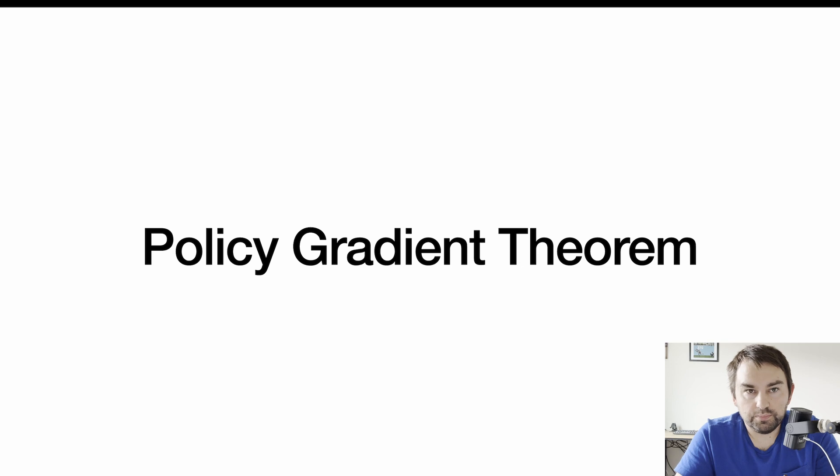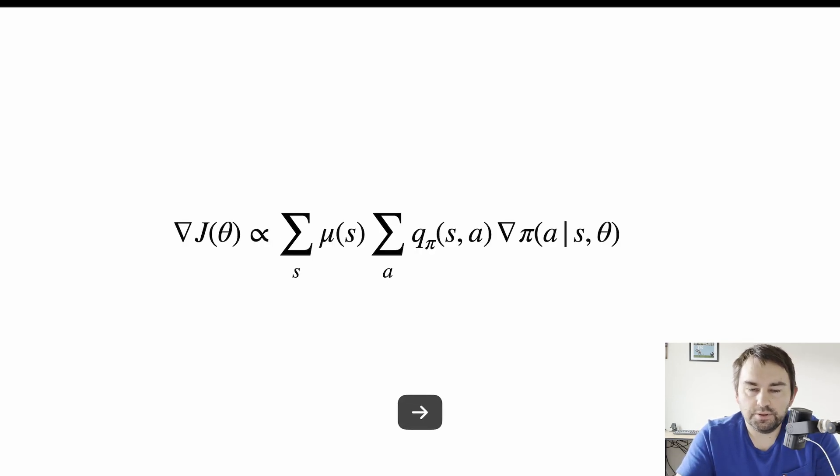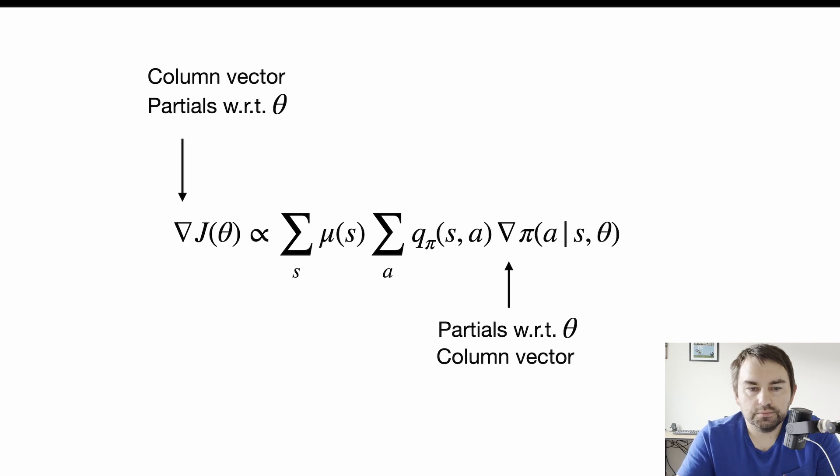Now let's look at the policy gradient theorem itself. So here is our policy gradient theorem. First, note that each gradient here is a column vector of partial derivatives with respect to components of θ. So these things here are column vectors. This is not just one scalar, this is multiple numbers here.